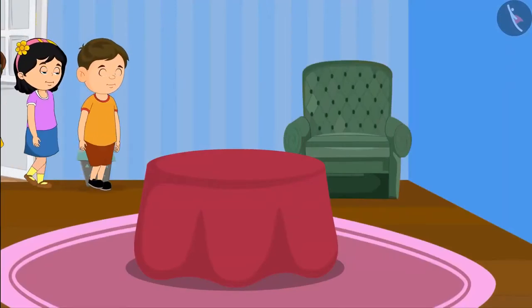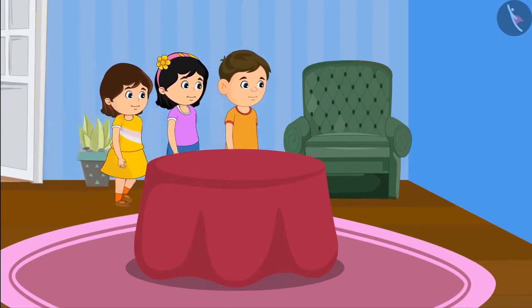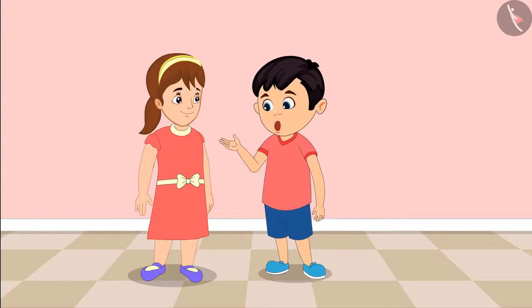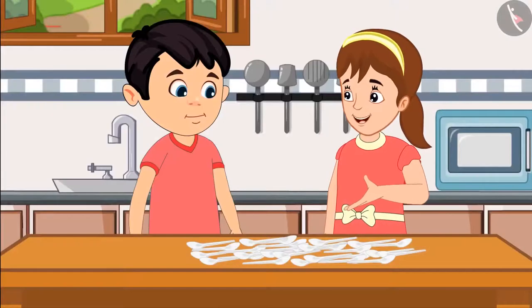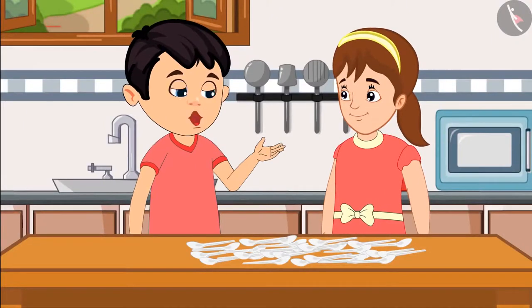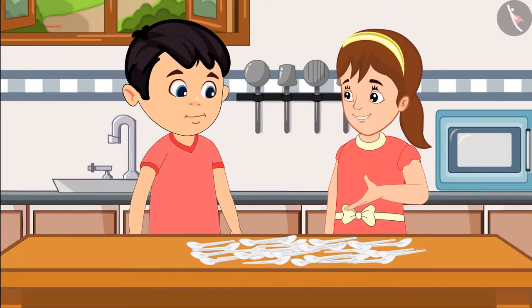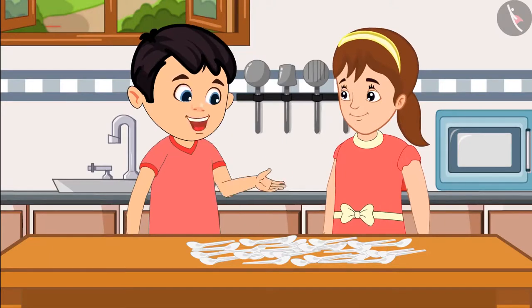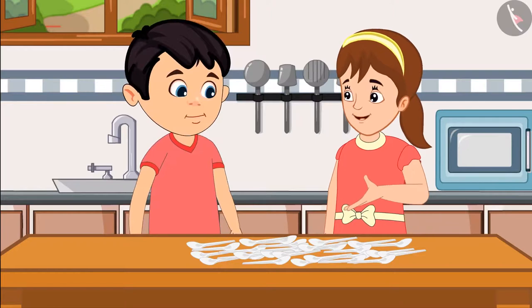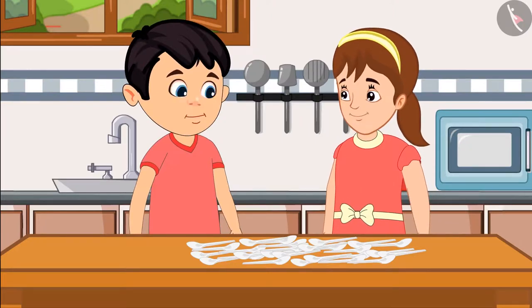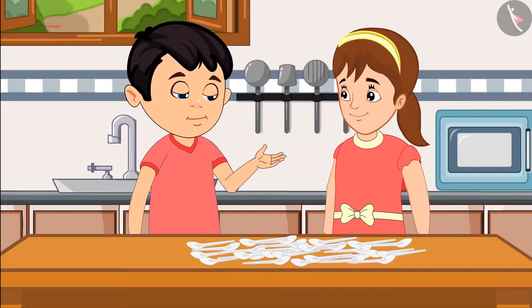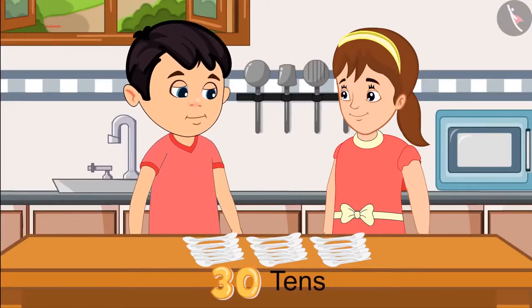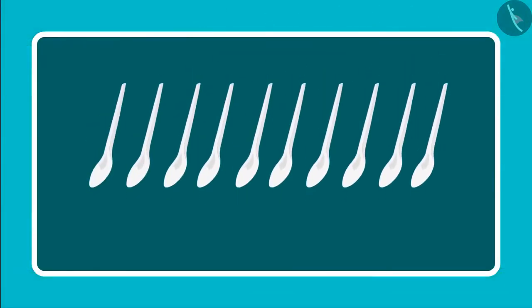It's evening now and guests are coming to Chotu's house. Chotu and Aarti are serving the guests. Aarti asked where the spoons were. Chotu showed her in the kitchen. Aarti asked how many spoons there were. Chotu said: 'I have taken 30 groups of 10 spoons from the shop.' But Aarti noted that 30 groups seemed a lot and the spoons looked too few. They decided to count again, dividing them into groups of 10. Chotu counted: '10, 10, and another 10, so a total of 30 tens.'